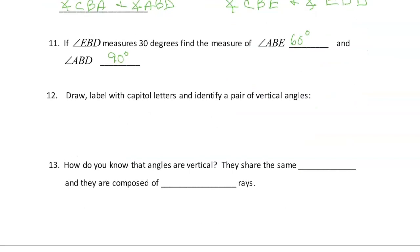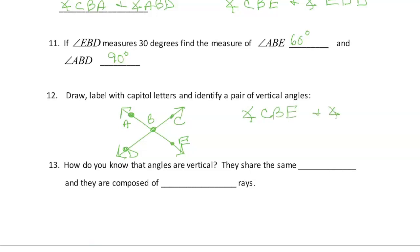Identify a pair of vertical angles. Drawing a cross with points A, B, C, D, and E — angles CBE and ABD are a pair of vertical angles. Those are the side ones.